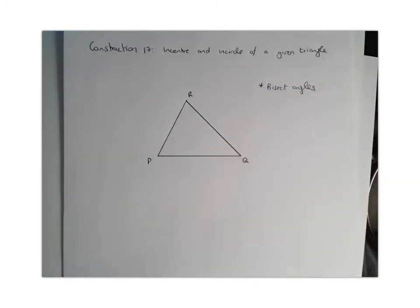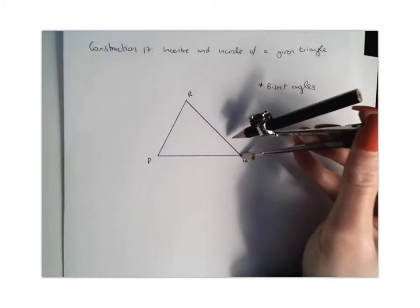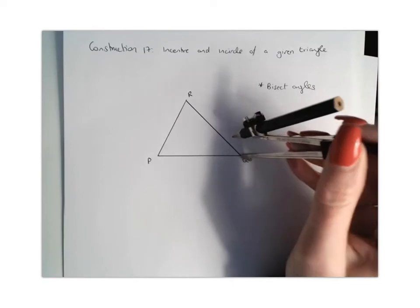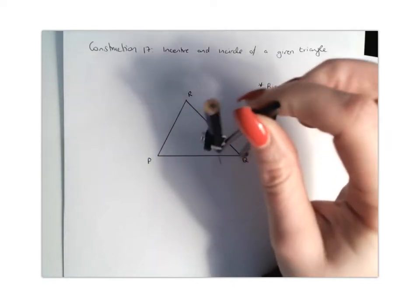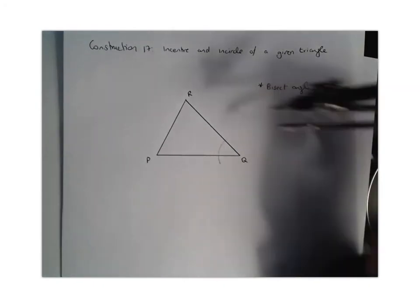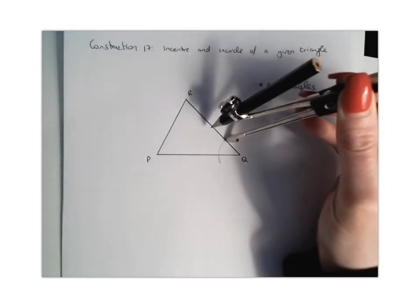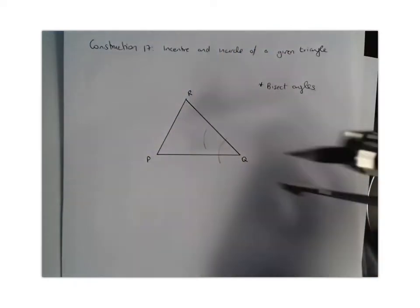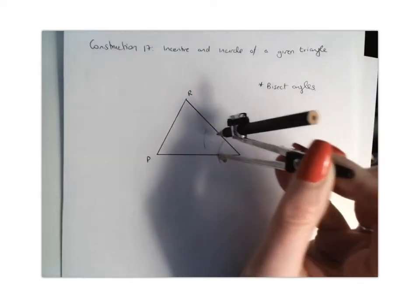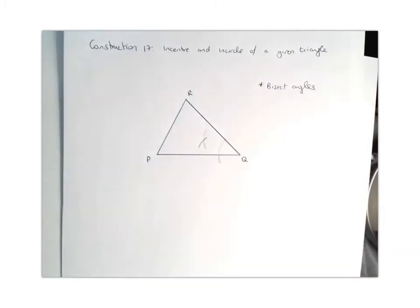So we're going to get our compass and we're going to bisect the angles. So again when you're bisecting angles you need to go back to your junior cert constructions if you've forgotten. But you're going to place your compass down on one of the angle's vertices. You're going to draw yourself an arc. You're then going to go to that point of intersection keeping your compass at the same distance and you're going to do it again. And then you're going to come to the other side and you're going to do it again.